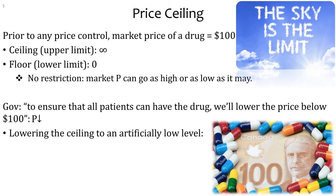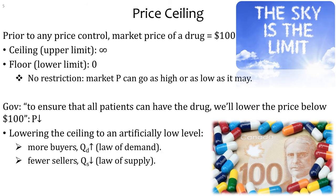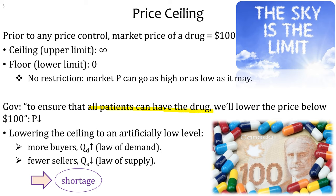Lowering the ceiling to an artificially lower level will result in more buyers — remember the law of demand. Because the price is lower, more people are willing to buy. But fewer sellers will supply — because the price is lower, the law of supply applies. You get lower quantity supplied and higher quantity demanded. That is called a shortage. So this price ceiling, like any price ceiling, creates a shortage and defeats its purpose — the idea was that all patients can have the drug, but can they when there is a shortage? No.